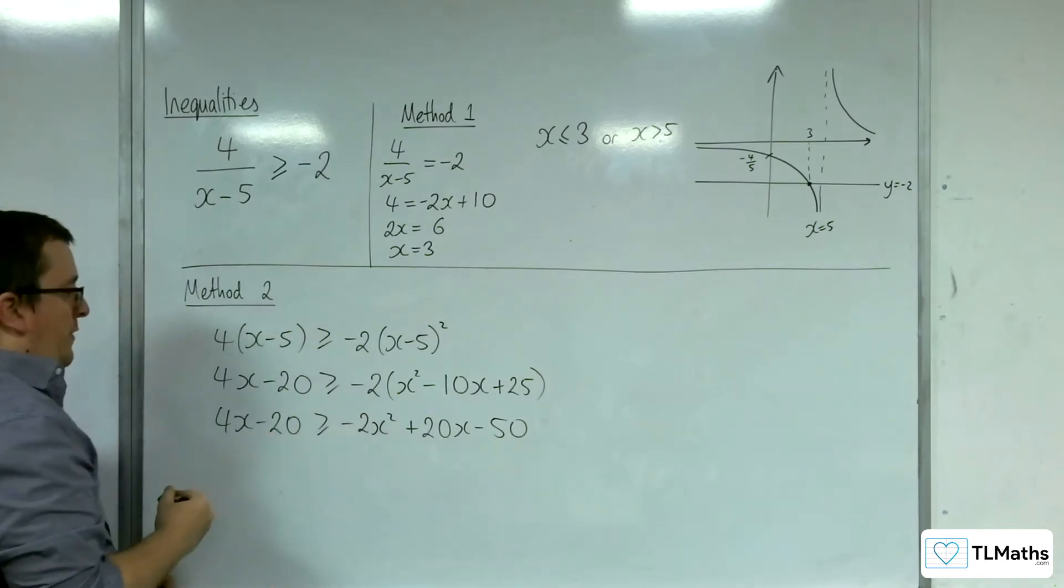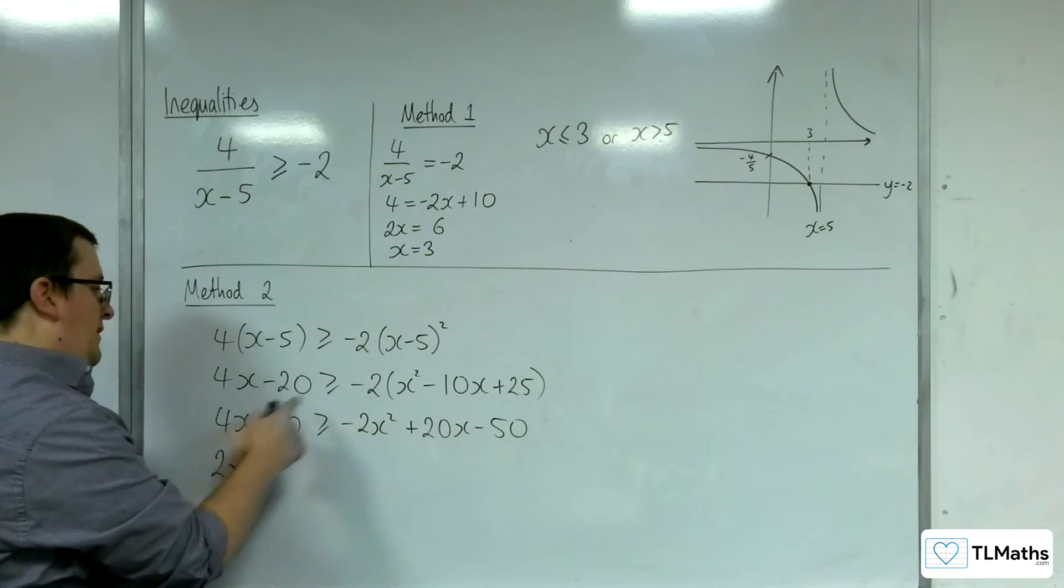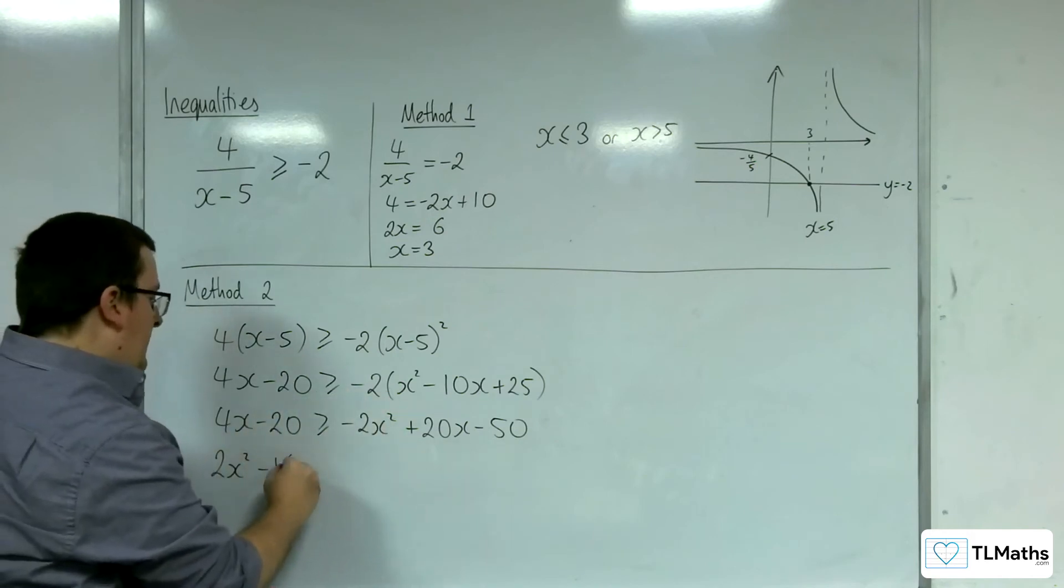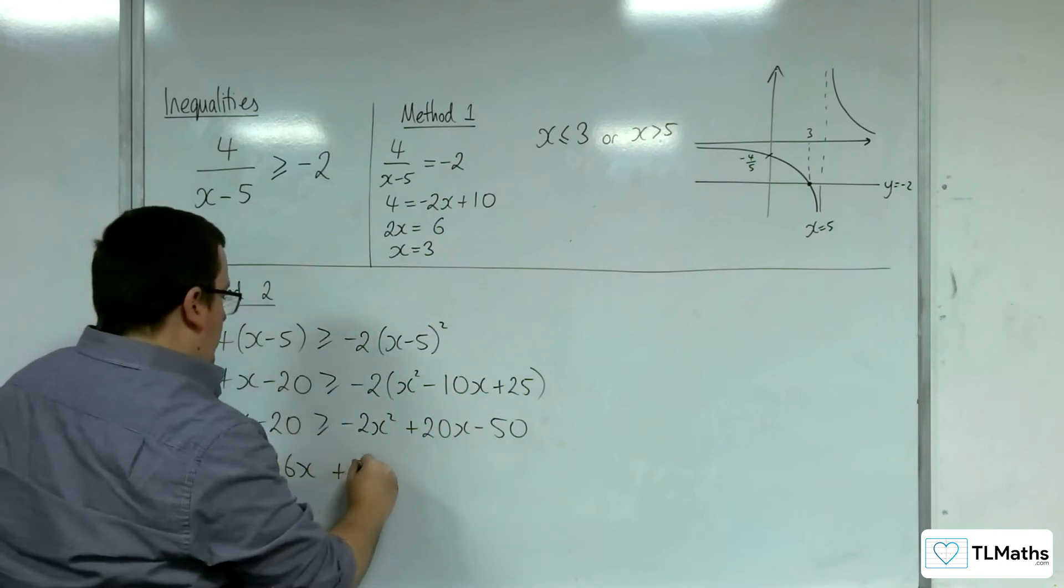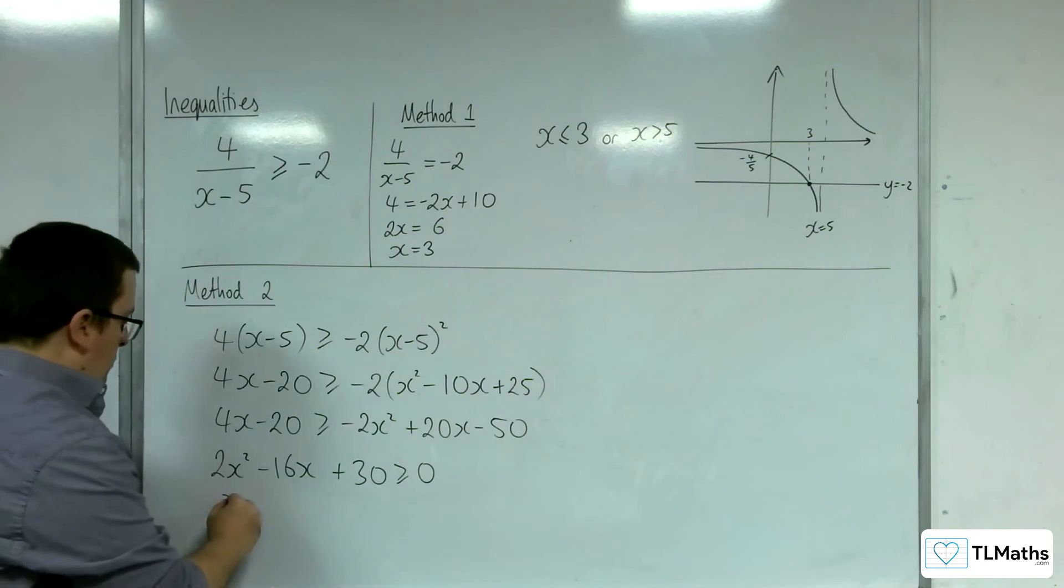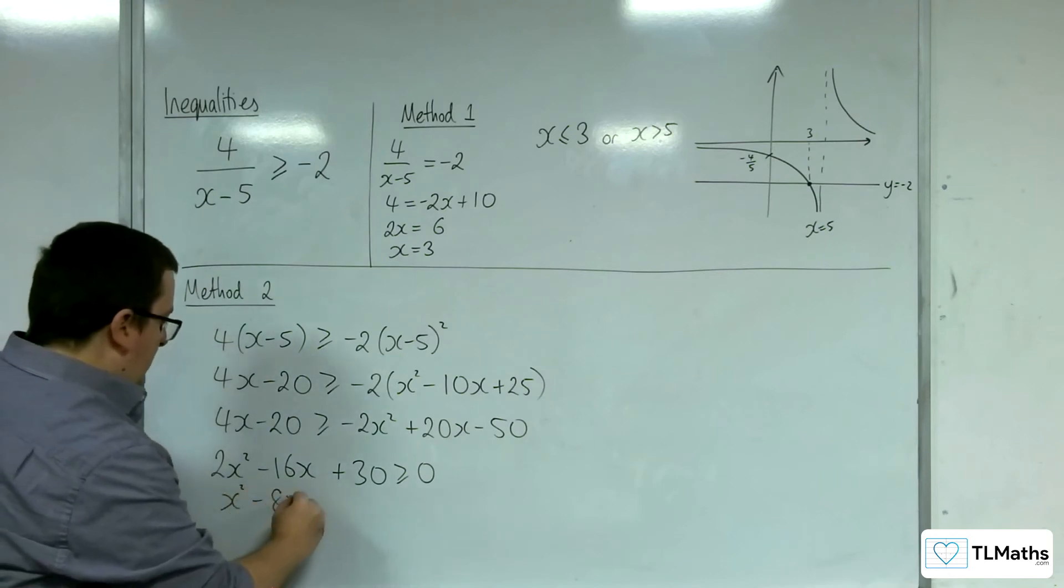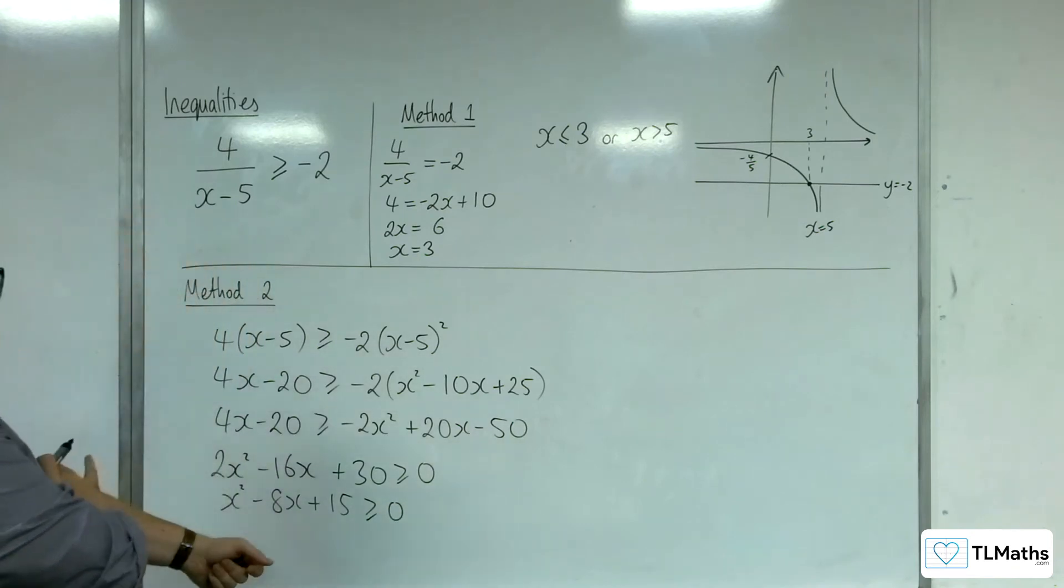Move everything on to the left-hand side. So 2x squared, we've got 4x take away 20x, so minus 16x. And then minus 20 plus 50, so plus 30 is greater than or equal to 0. Divide through by 2. So x squared take away 8x plus 15 is greater than or equal to 0.